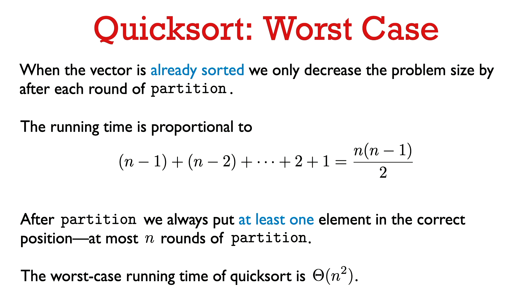So we call partition at most n times and each call takes O(n), showing that for any input the running time of QuickSort is O(n²). Combined with the Ω(n²) lower bound from the sorted-input example, the worst-case complexity of QuickSort is Θ(n²).